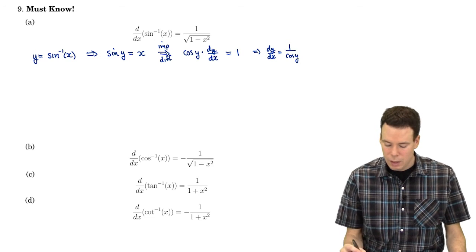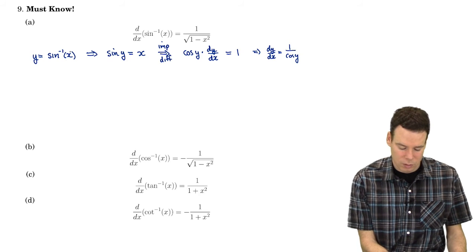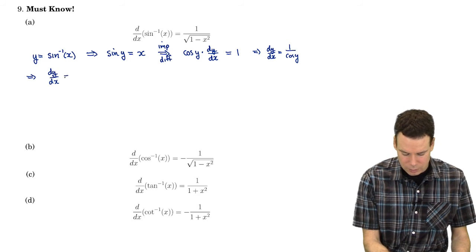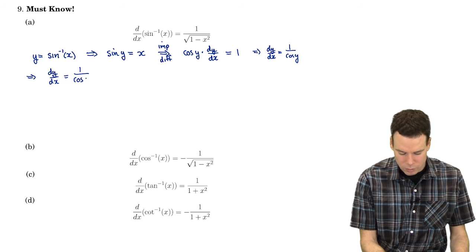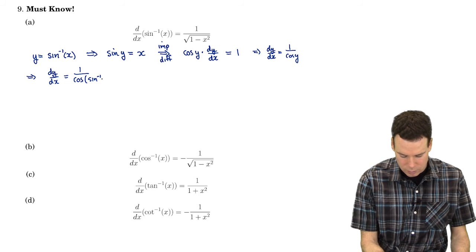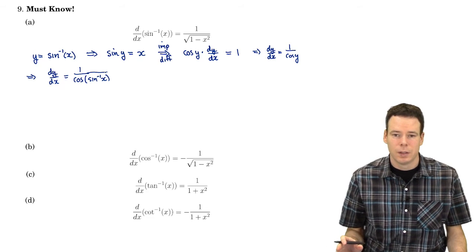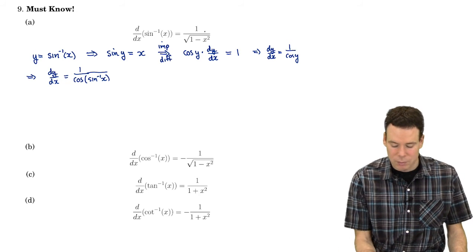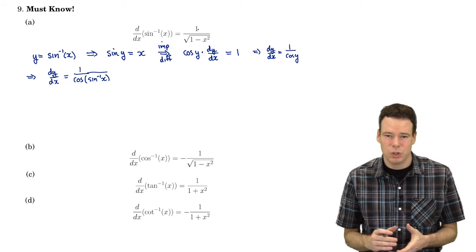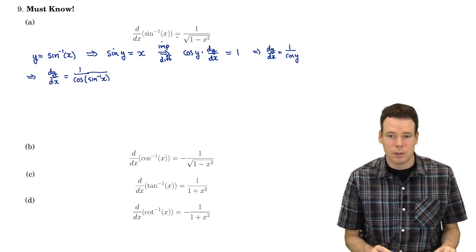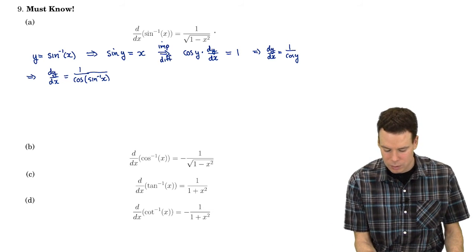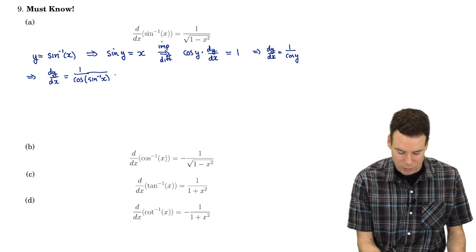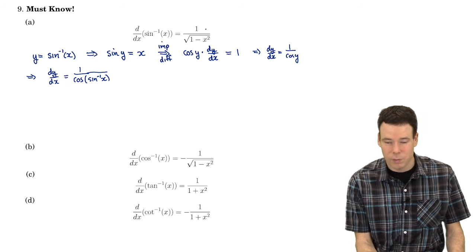We'd like the derivative expressed in terms of x. So dy/dx equals 1 over cosine of arcsine of x. This doesn't yet look like 1 over the square root of 1 minus x squared. We have something equivalent, but it's not in a useful algebraic form — for example, plugging in x equals a third is easier with the algebraic expression than computing cosine of arcsine of a third. So let's get it into that form.